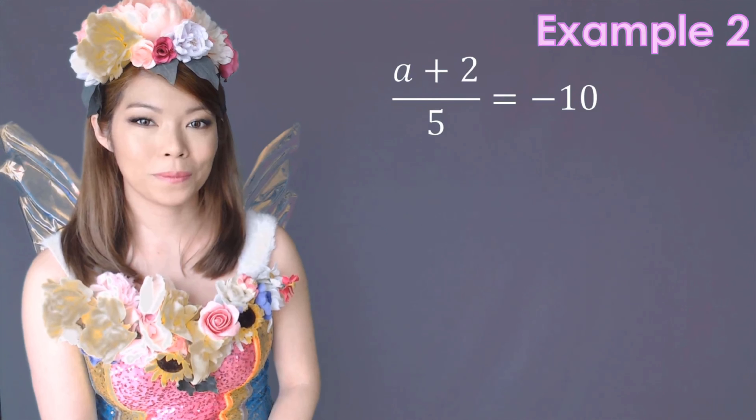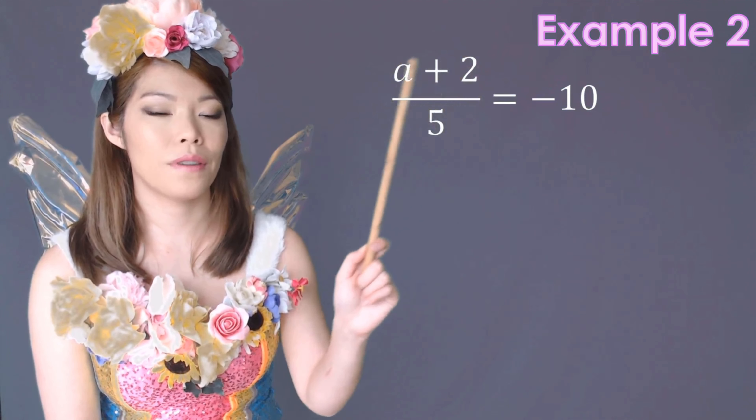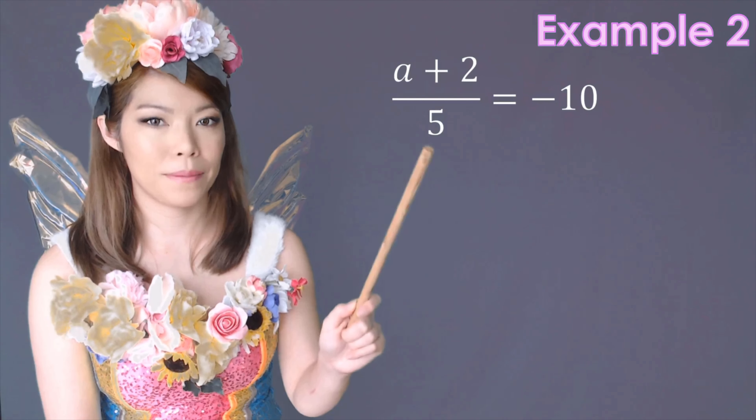Another example. So this time, x plus 2 divided by 5 equals minus 10. The inverse of dividing by 5 is multiplying by 5, so you apply that to both sides. The left side cancels out. So we're left with x plus 2 equals minus 50. Now we have to get rid of the plus 2. The inverse of plus 2 is minus 2. Be very careful — minus 50 minus 2 is minus 52.